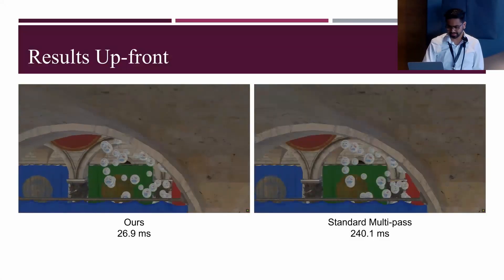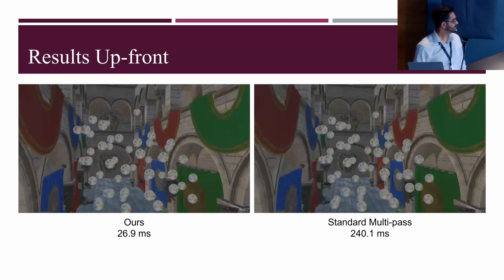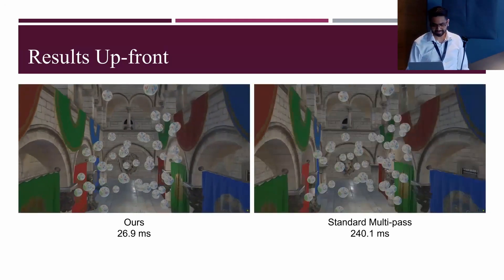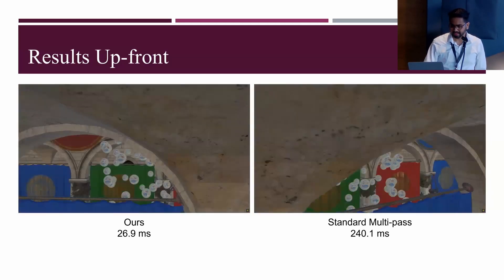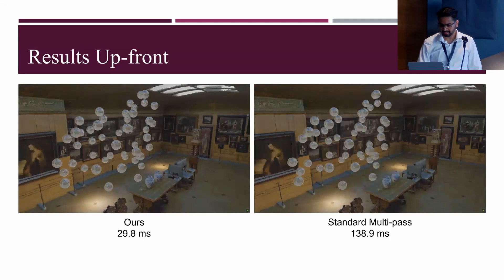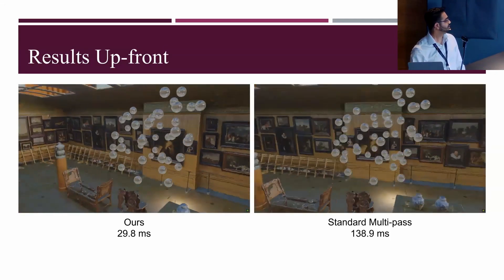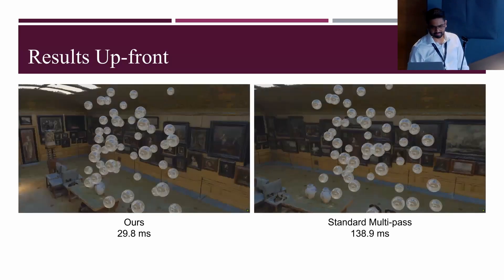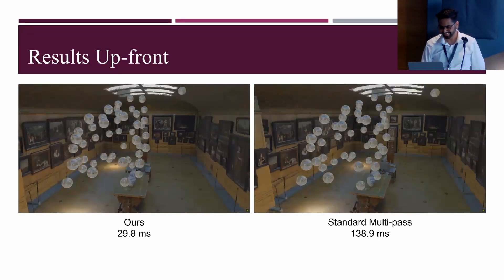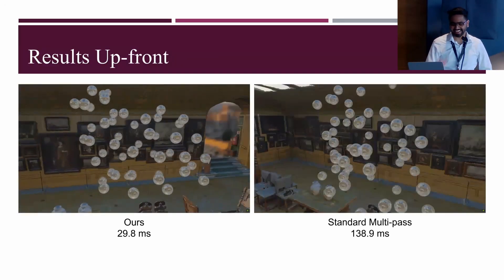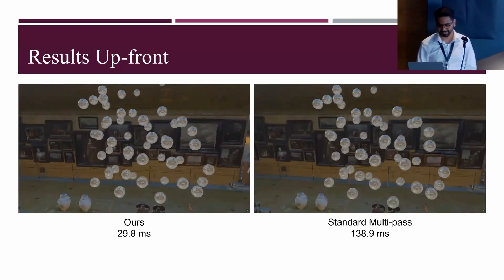Here's a video showing our method on the left versus standard multipass on the right. Here's one more — the gallery scene with the same configuration: 50 reflective objects generating 300 off-screen views. Our method takes about 30 milliseconds, whereas standard multipass takes about 139 milliseconds.